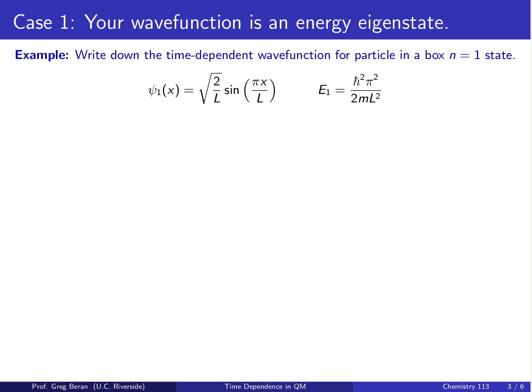So let's do some examples. Consider the first case where your wave function is in fact an energy eigenstate. For example, if we're in the particle-in-the-box system, the n equals 1 state has the wave function ψ₁(x) equals square root of 2 over L sine πx over L.